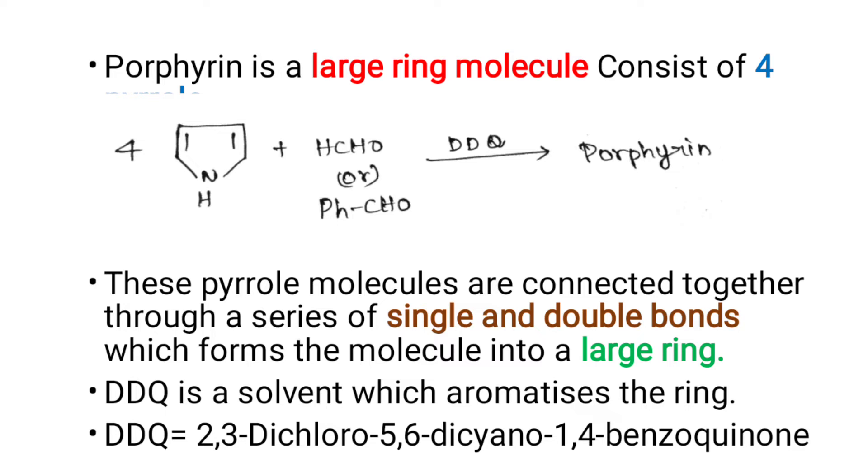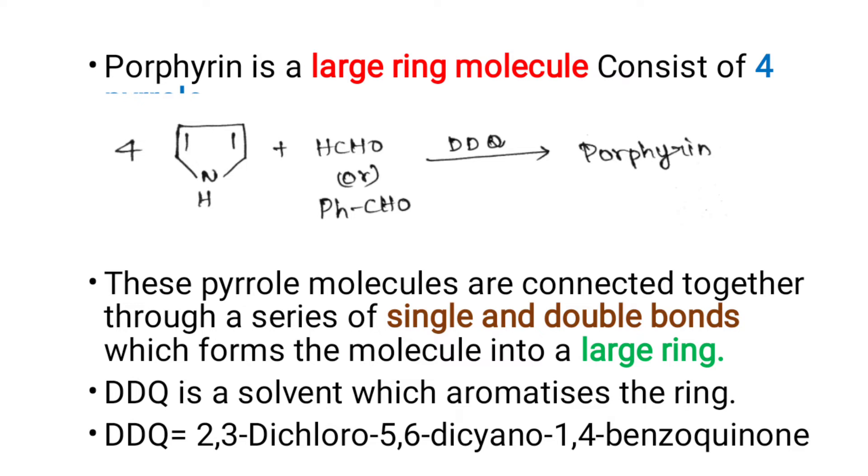DDQ is used in cyclization processes and to aromatize the ring. By the addition of an acid to porphyrin, we will get a dication, and by the addition of a base, a dianion is formed.